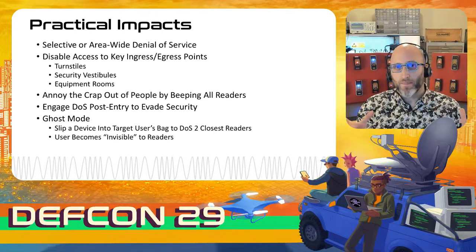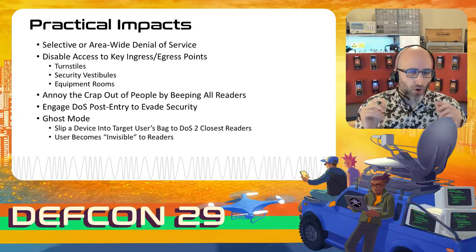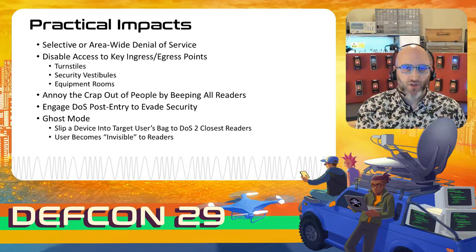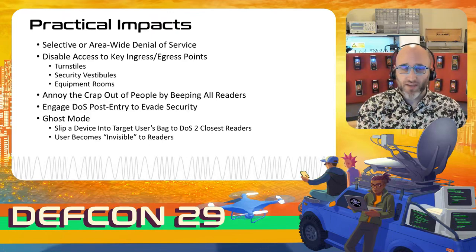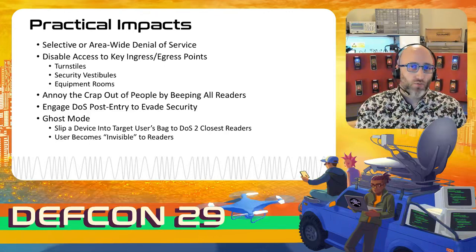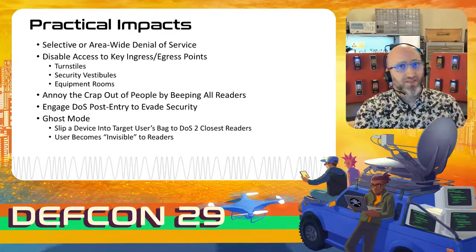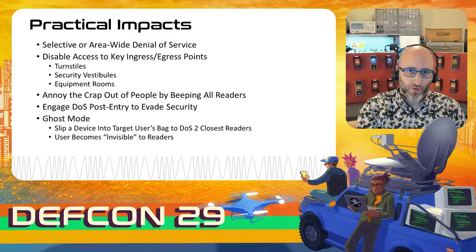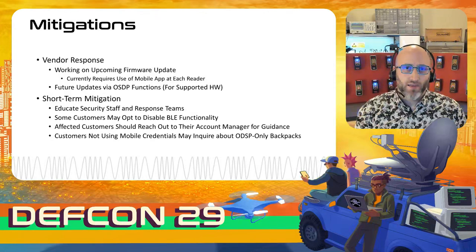The final really interesting scenario is ghost mode, where we program a device like an AirTag to scan for and perform the denial-of-service attack against the first one or two readers with the strongest signal. If you place this AirTag in someone's bag, any reader they approach will suddenly stop working. By the time they get to the reader and try to present their card, the reader won't read the card — they become invisible to card readers, like a ghost. For some customers, this is a big deal; for others without these Bluetooth-enabled modules installed, it may not be. We have been in contact with the vendor and working on solutions.